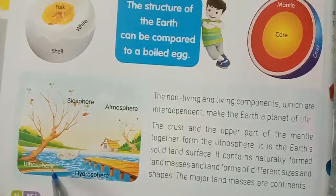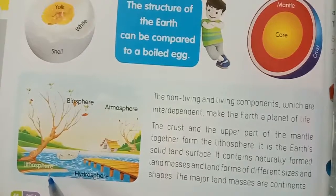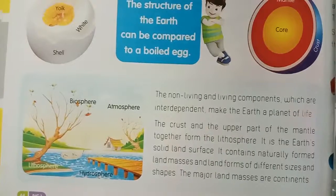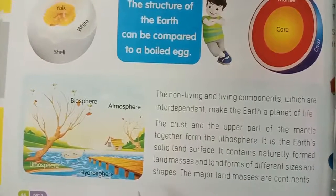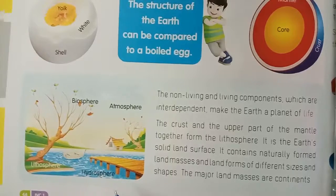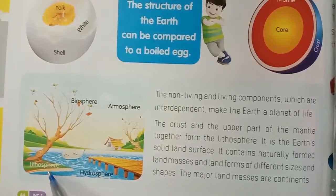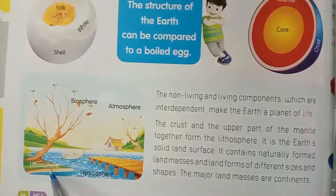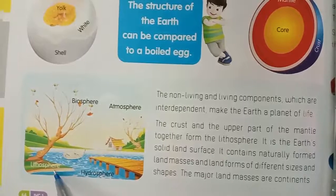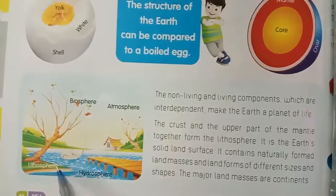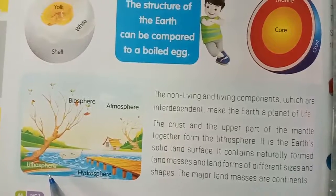The crust and upper part of the mantle together form the lithosphere — the Earth's solid land surface. It contains naturally formed land masses and land forms of different sizes and shapes. The major land masses are continents.